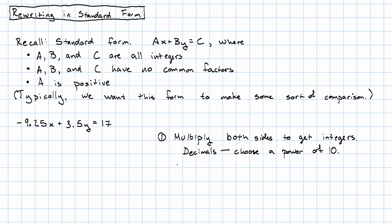So I'll take 100 times negative 9.25x plus 3.5y equals 100 times 17. Distribute and actually do the multiplication. You may use your calculator for this multiplication if you want. Negative 925x plus 350y equals 1,700.